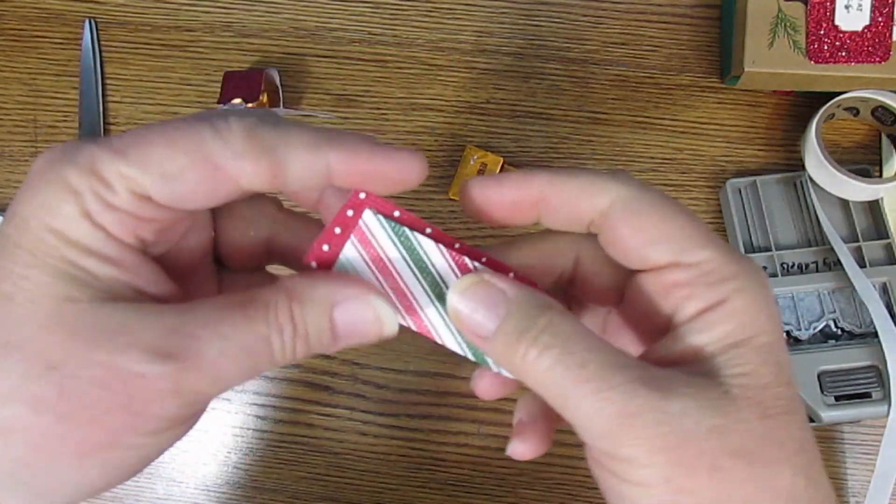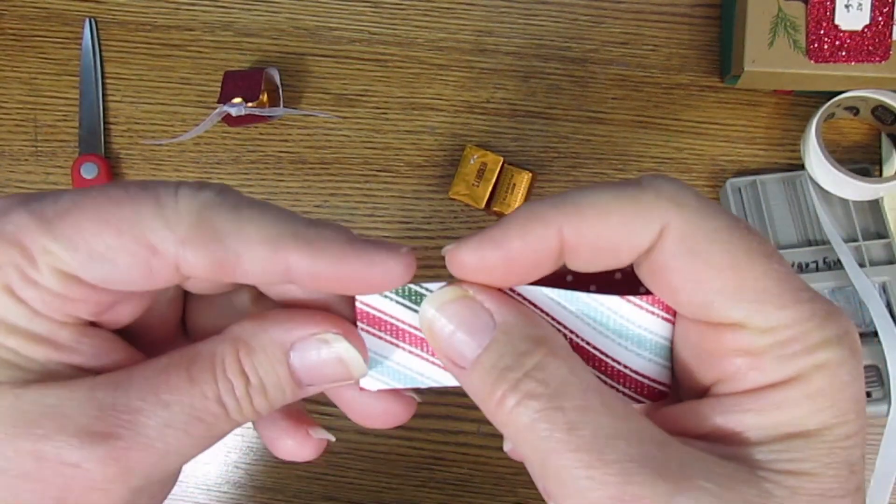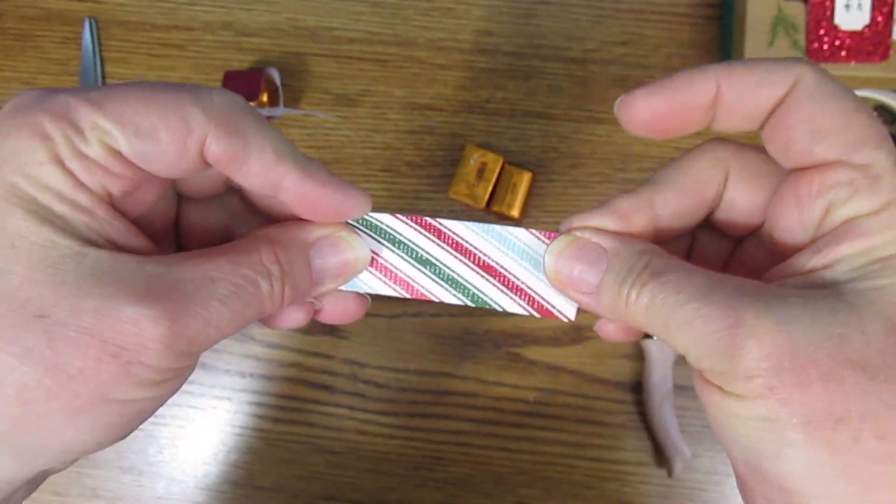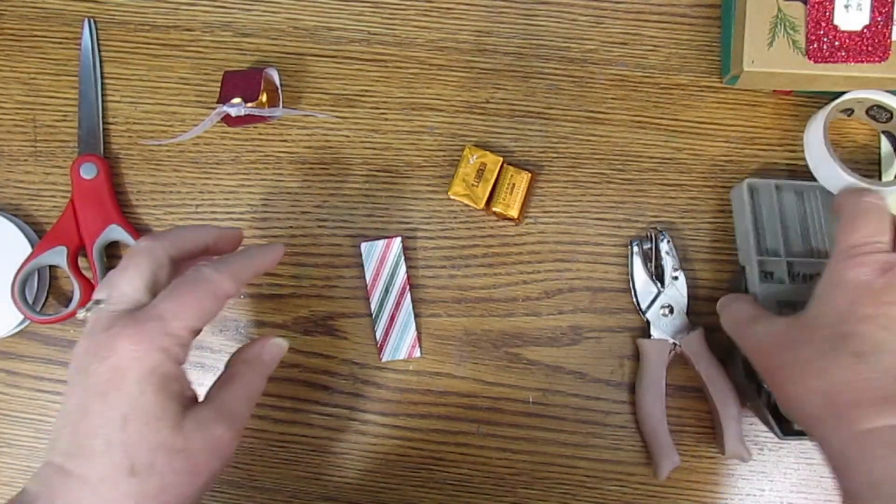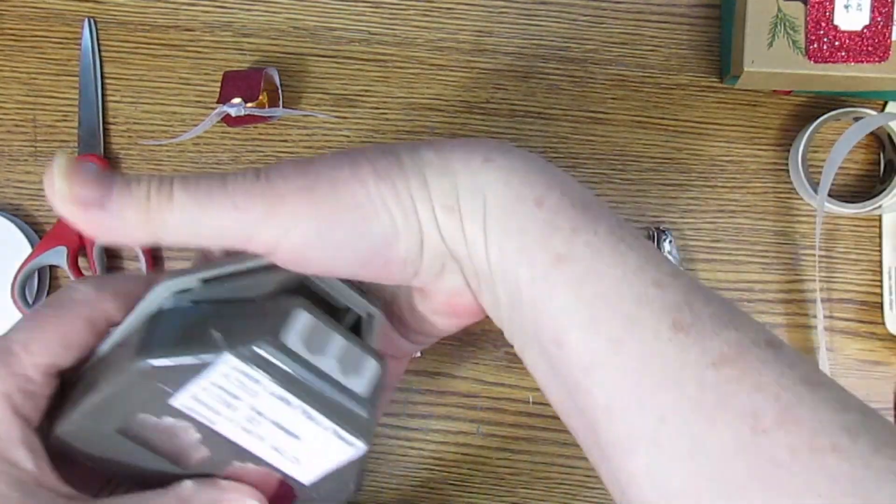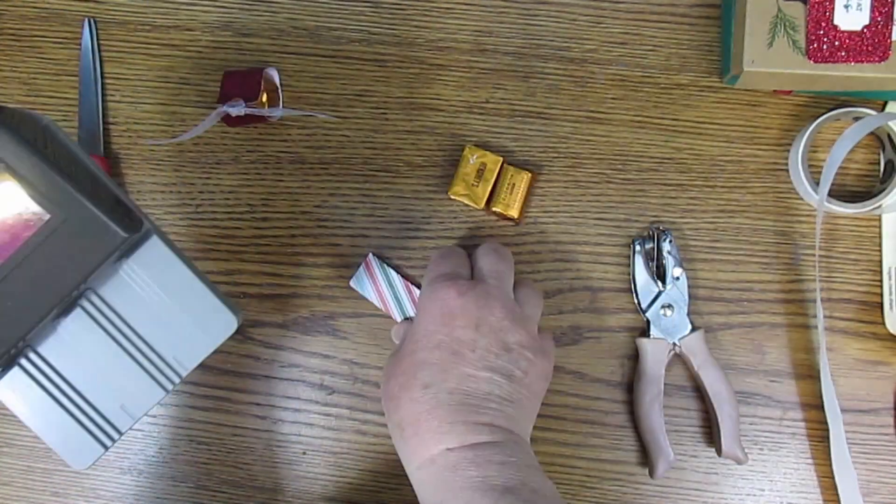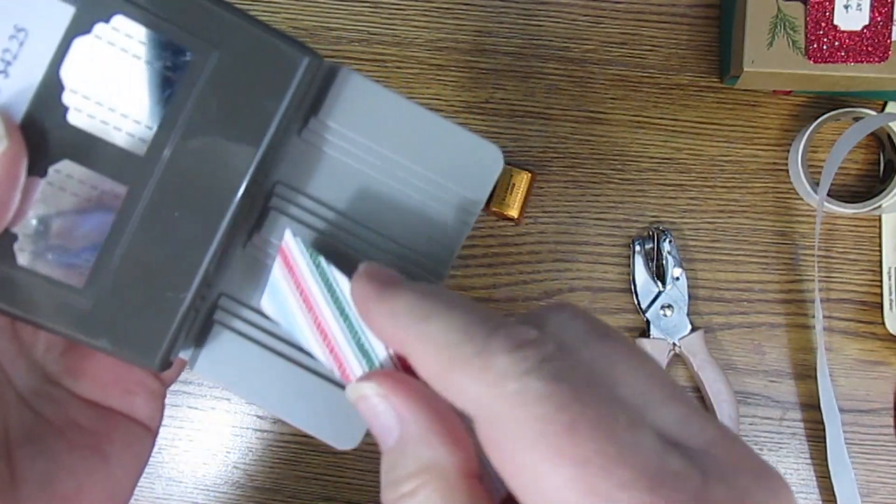So the first thing you'll do is fold it in half and you can use any of the pick-a-punch punches and choose whichever end you want.